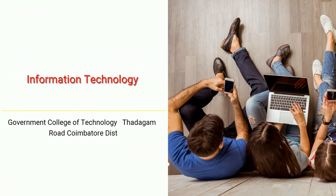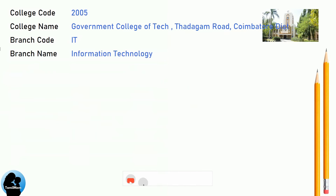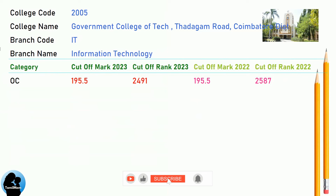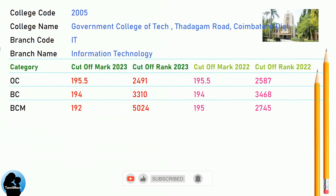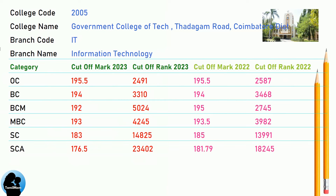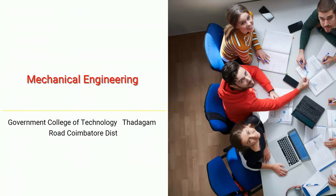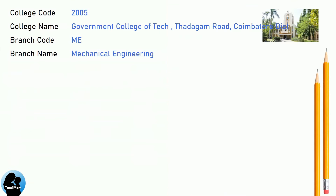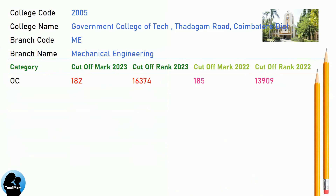Government College of Technology, Thadagam Road, Coimbatore District — cut-offs for Information Technology, and cut-offs for Mechanical Engineering.